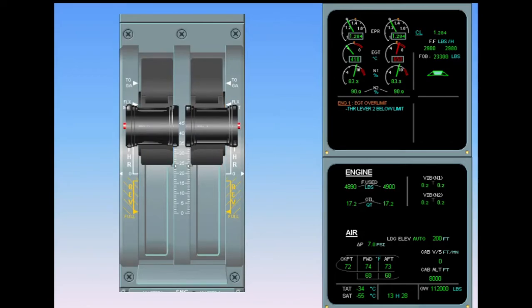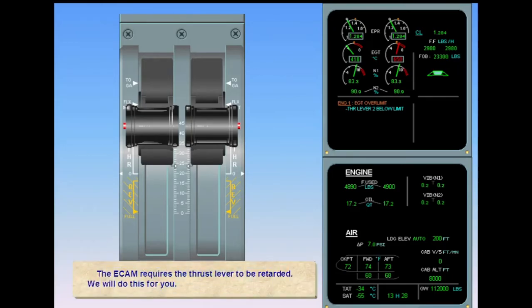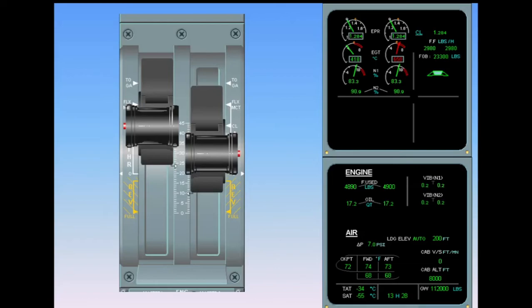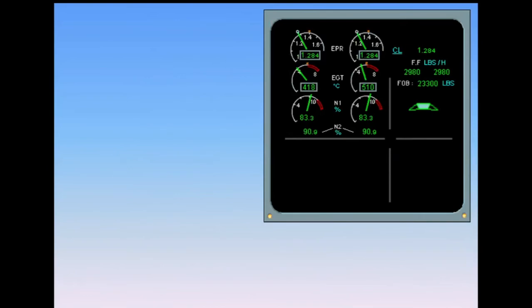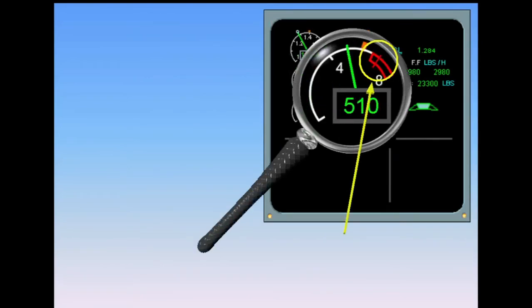The ECAM requires the thrust lever to be retarded. The EGT indicator finally changes from red to green. ECAM actions completed. A red strip appears at the max reached value and will disappear after a new takeoff or a maintenance action.